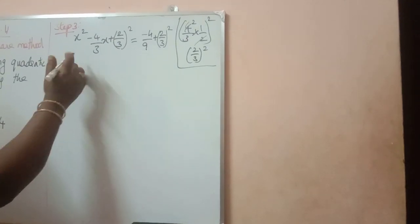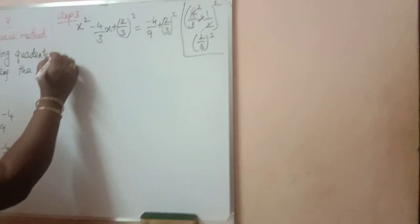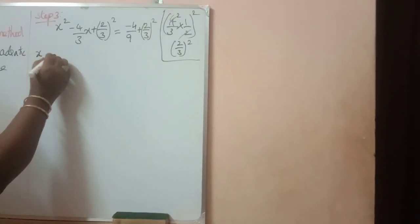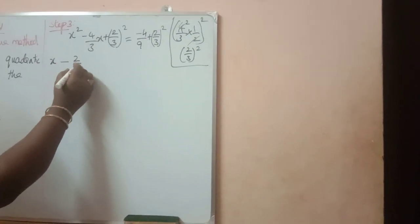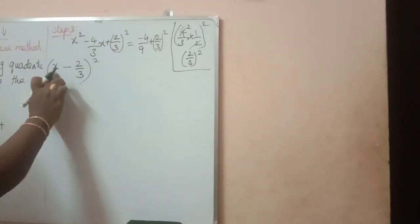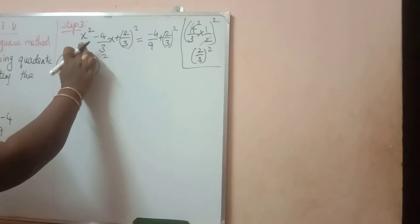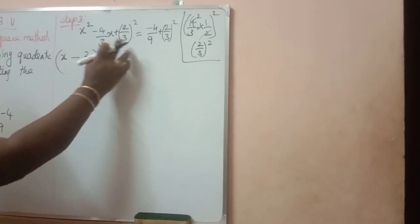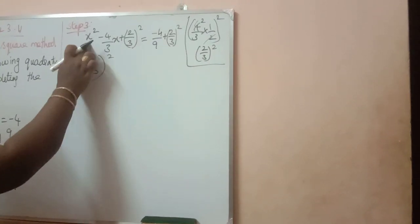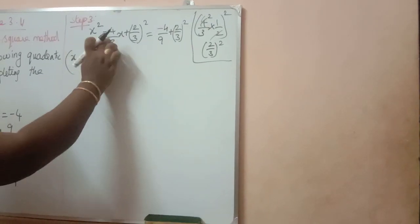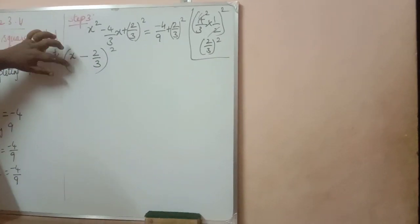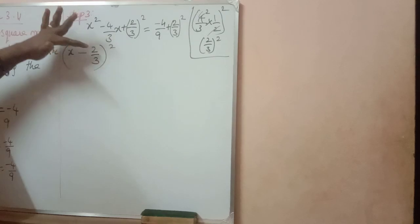Now, x square is the square of x. Here minus is there. 2 by 3 the whole square — so 2 by 3. This is a square, this is b square. So a is x, b is 2 by 3. If we expand using the formula a minus b the whole square, we will get a square minus 2ab plus b square. Find the square root of x square: we get x. Find the square root of 2 by 3 the whole square: we get 2 by 3. We get the sign from there. Plus 2ab means plus; minus 2ab in a minus b the whole square means minus.